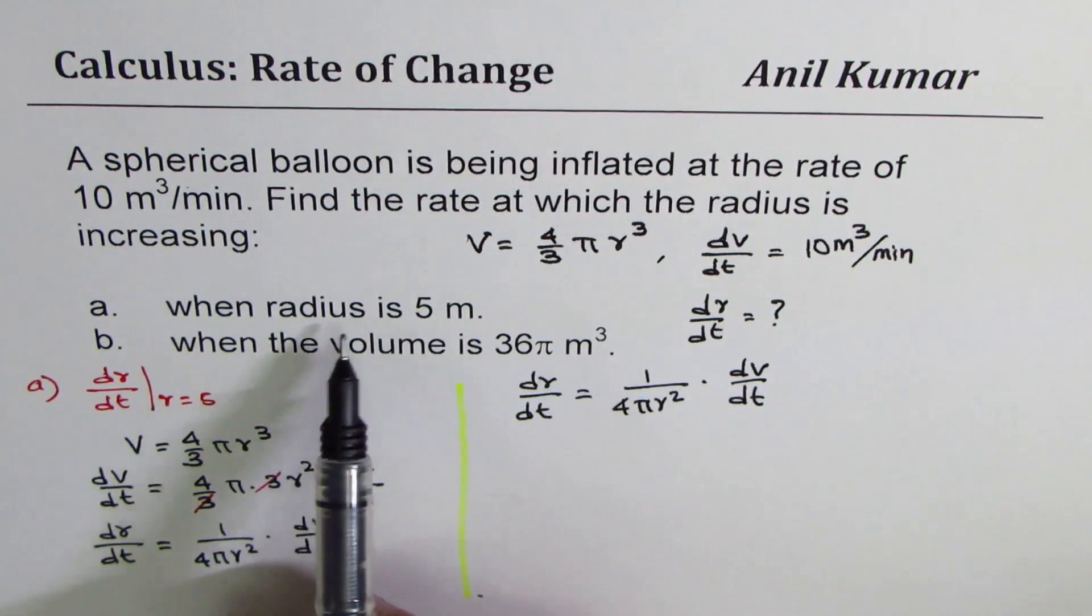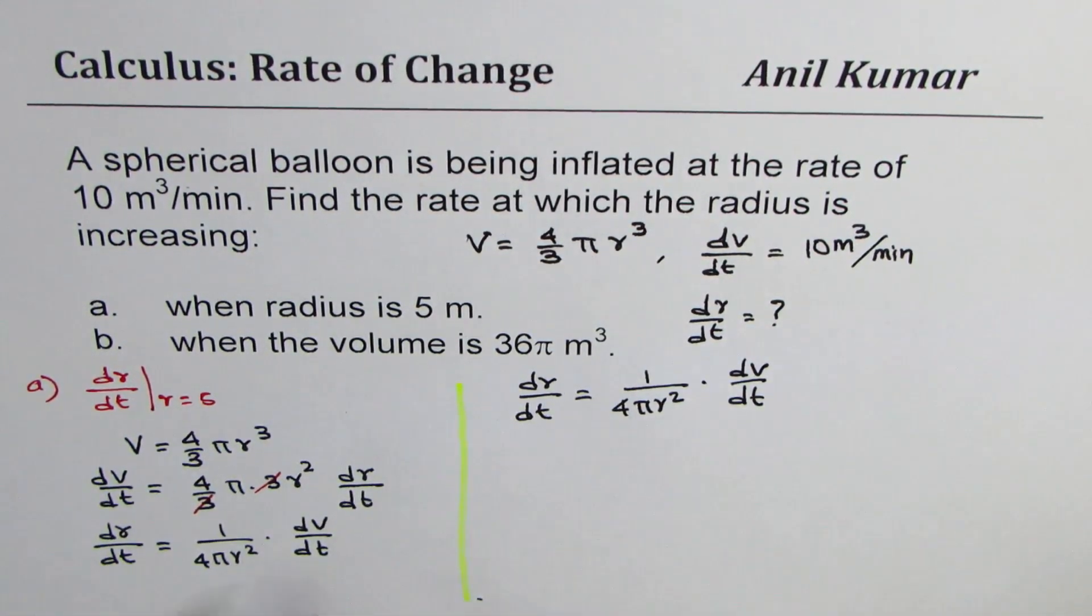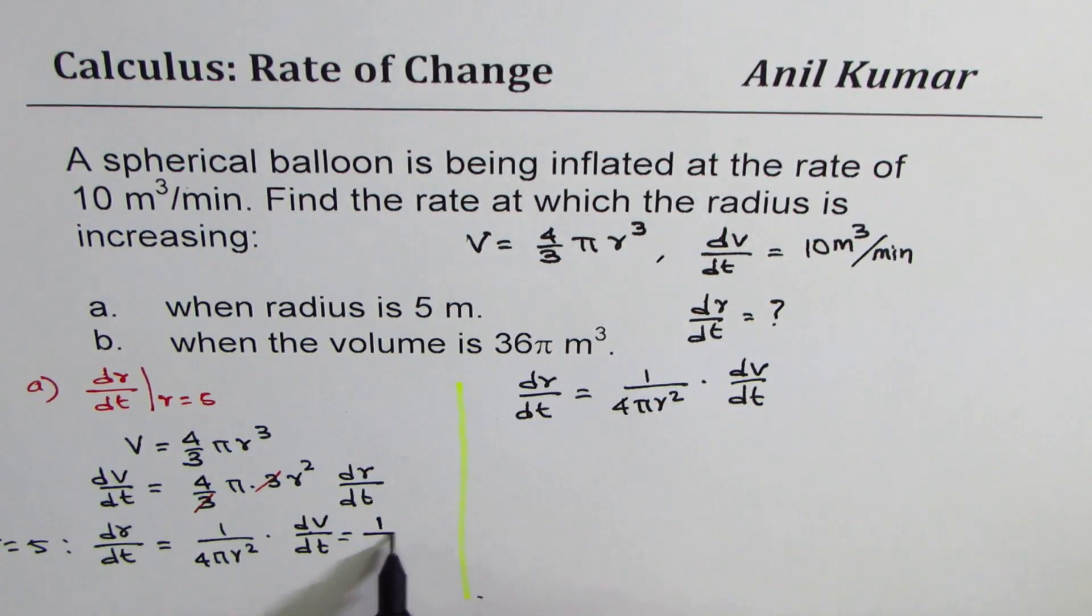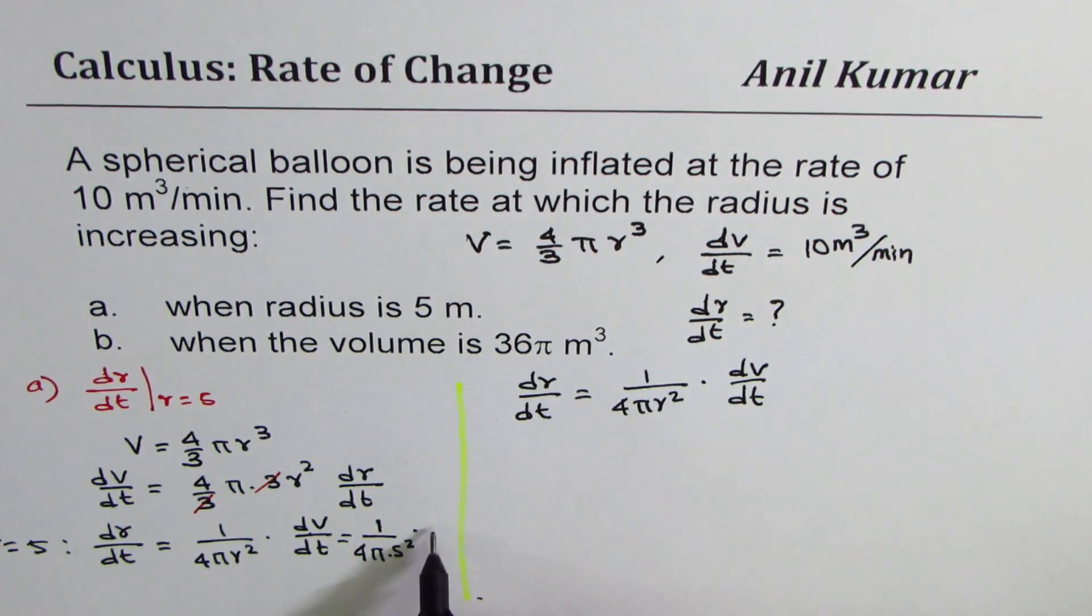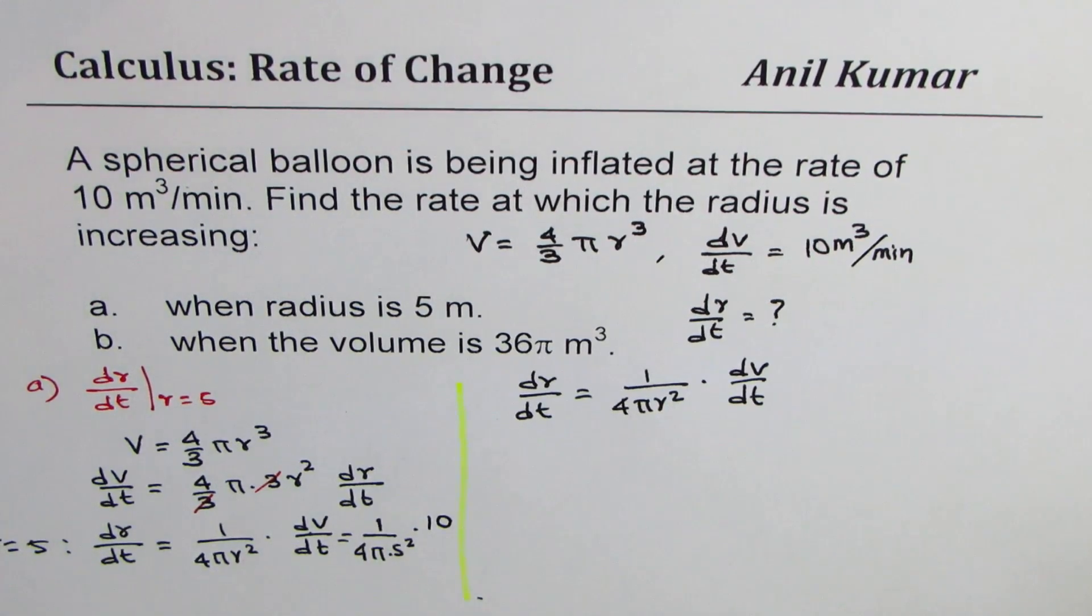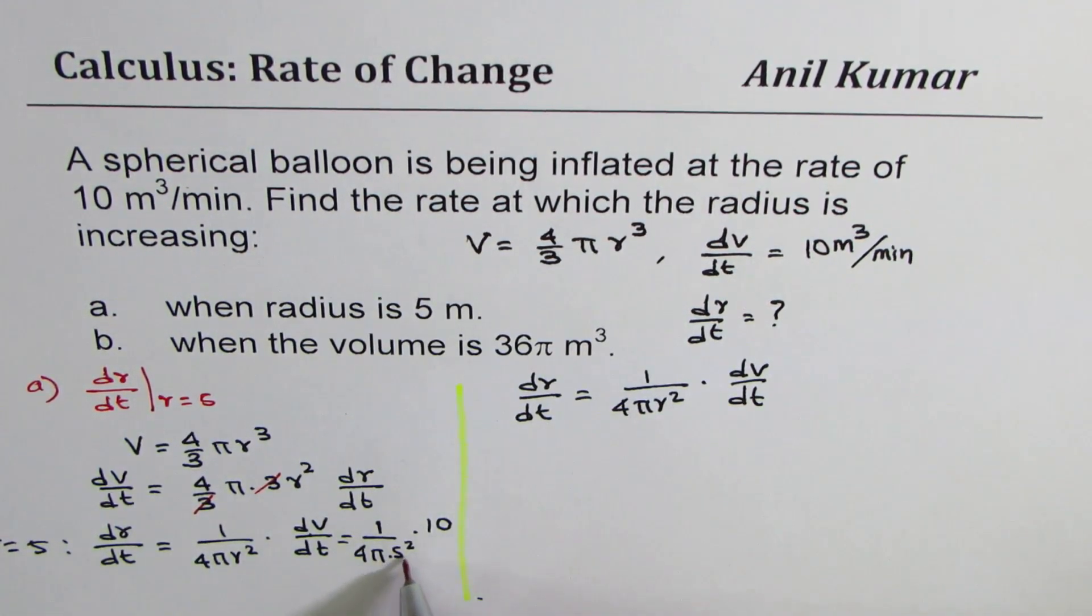In the first case, r is 5. So you can substitute r equals to 5 and find the answer. So when r equals to 5, what is the answer? So if I substitute 5 here, I get 1 over, dv dt is given to us as 10 meter cube. So this is 10. So 1 over 4 pi r is 5. So let me write this as 5 square. Times dv dt is 10, times 10.